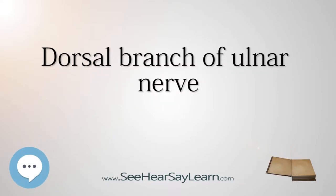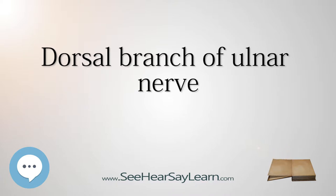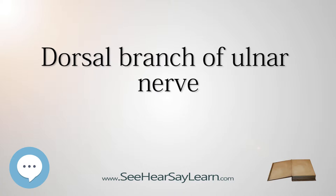The dorsal branch of the ulnar nerve arises about 5 cm proximal to the wrist. It passes backward beneath the flexor carpi ulnaris, perforates the deep fascia, and runs along the ulnar side of the back of the wrist and hand.